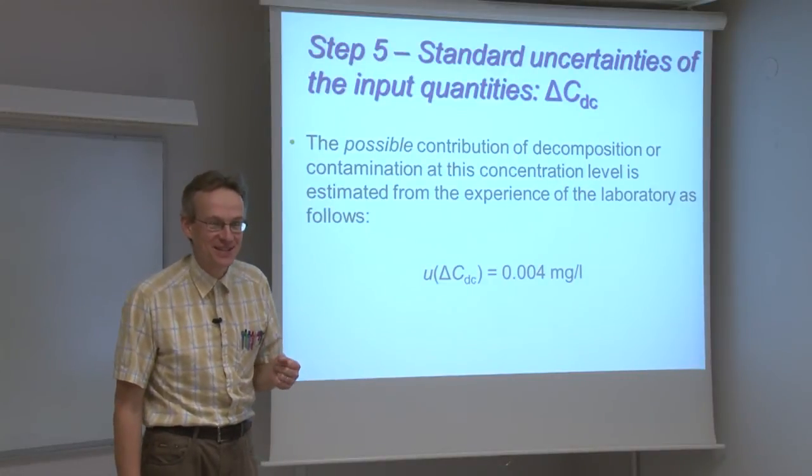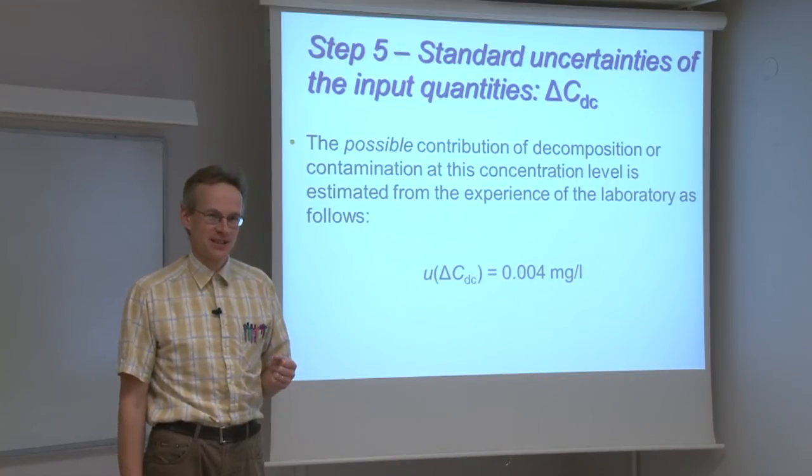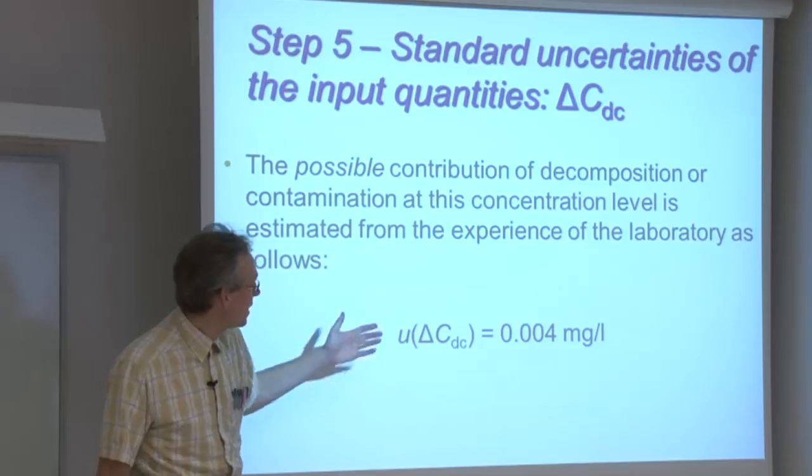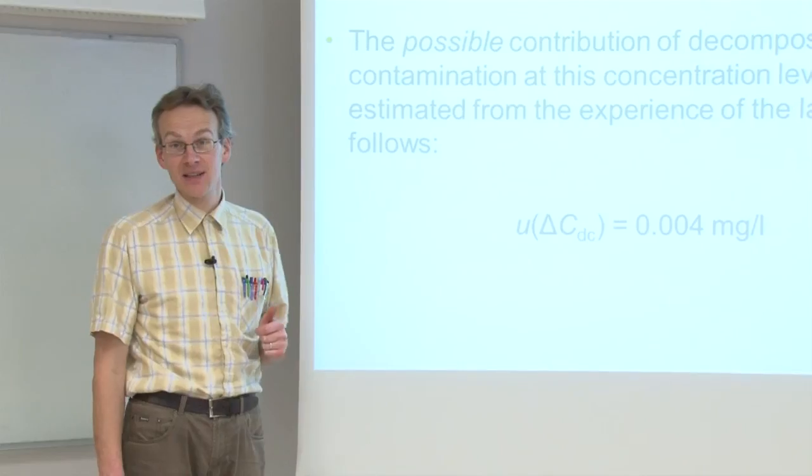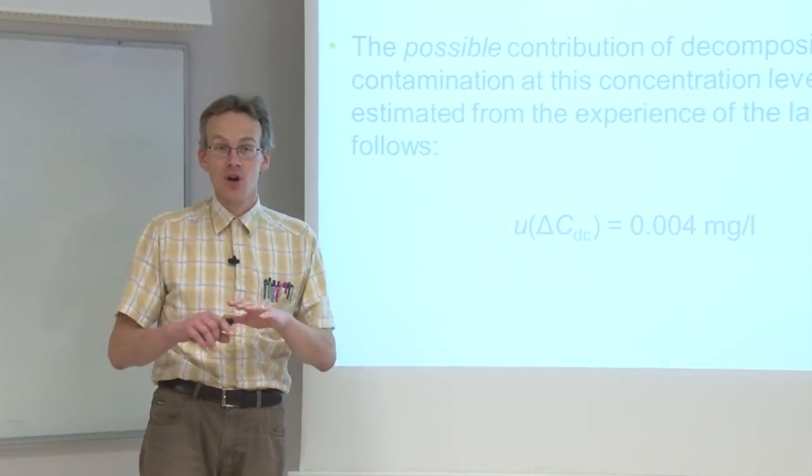This uncertainty, unless serious scientific research is carried out, cannot be easily rigorously estimated. So again, we have to use a value which is based on long-term experience. At this concentration level, it has been found that 0.004 milligrams per liter as standard uncertainty is a very suitable estimate for normal, usual conditions of ammonium determination.